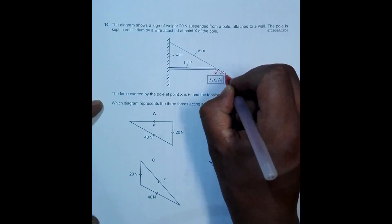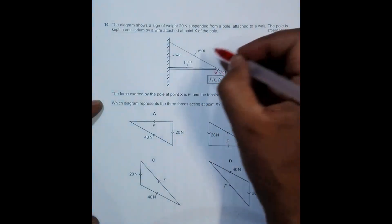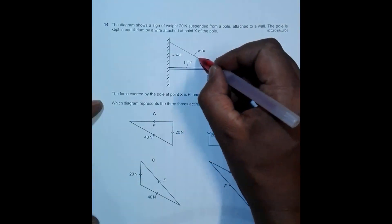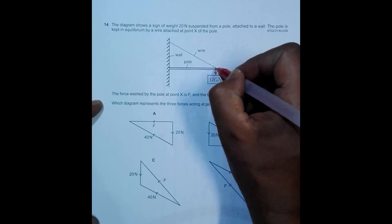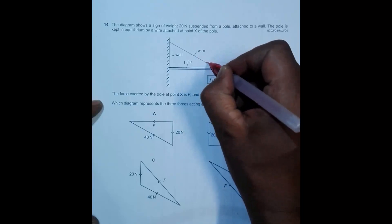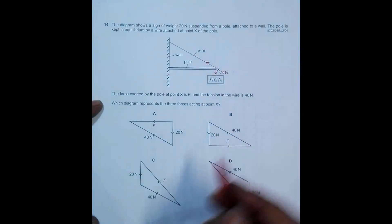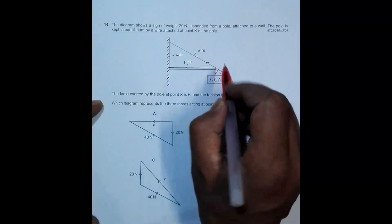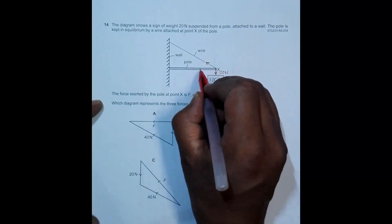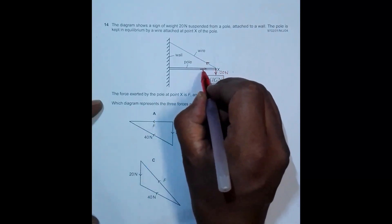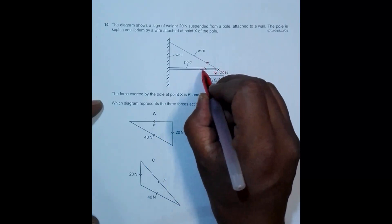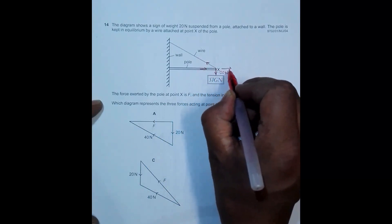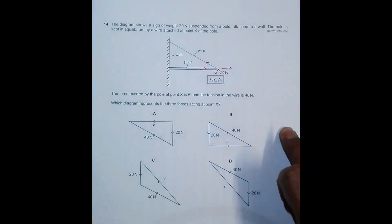The tension force on the wire will be in this direction at the point. The force given by the pole on the point should be in this direction. If I extend it here, it will be in this direction. So we have to find a triangle in which all the forces are like this.